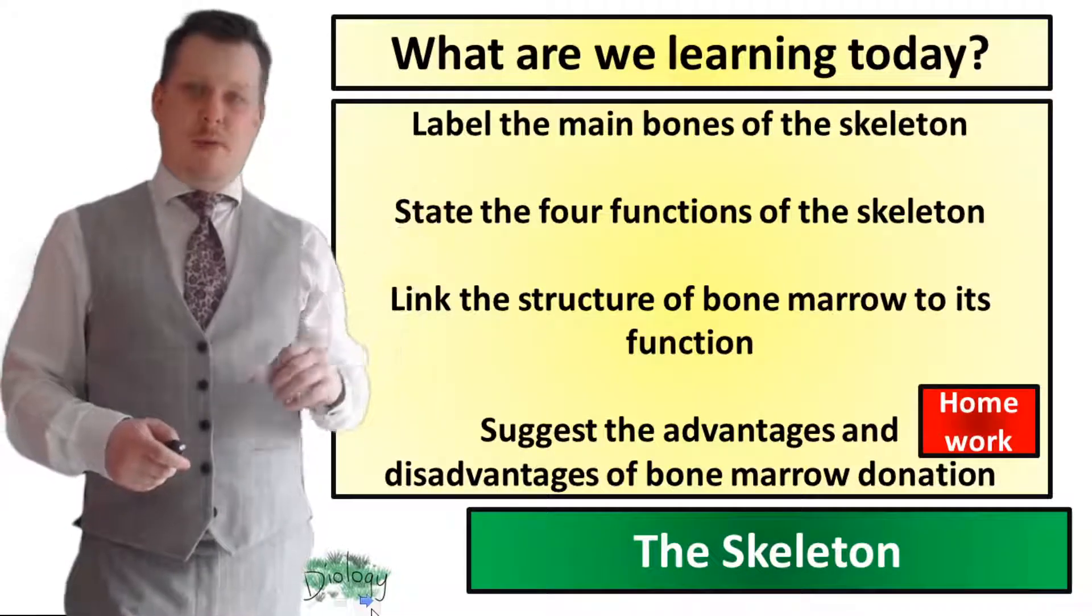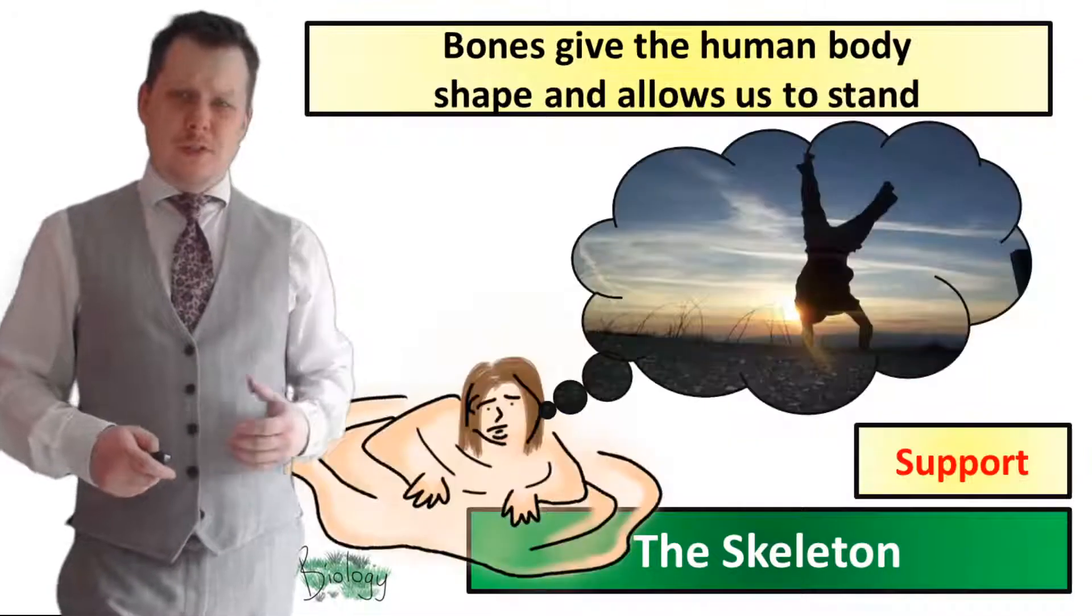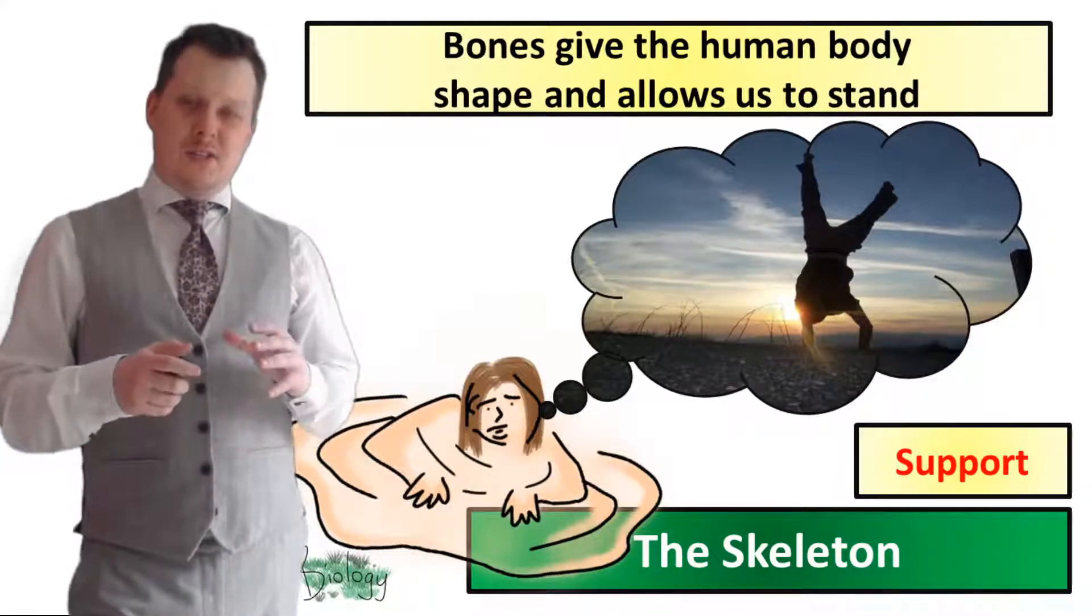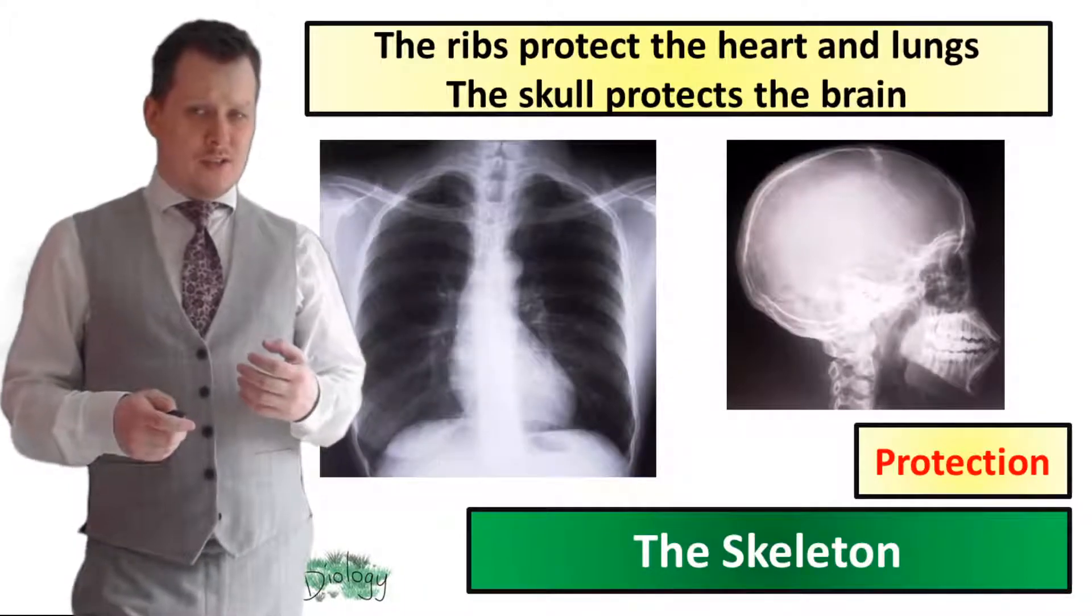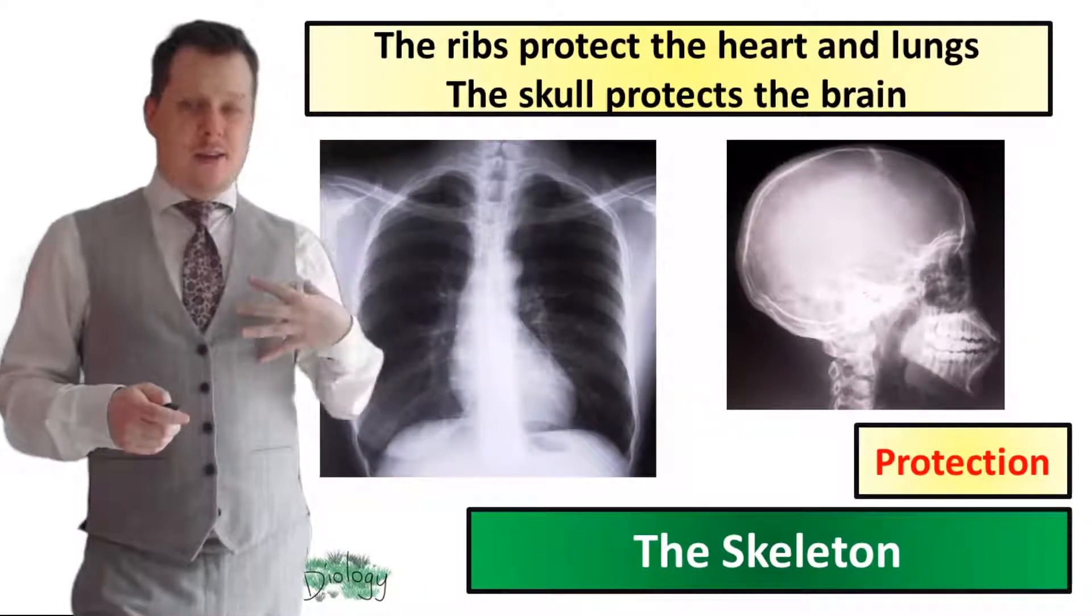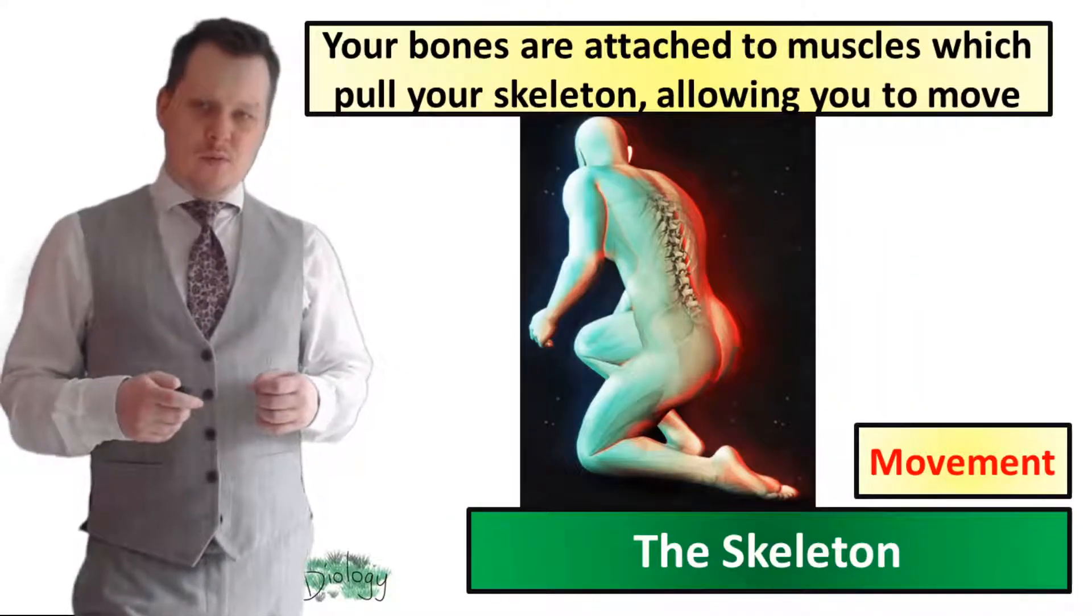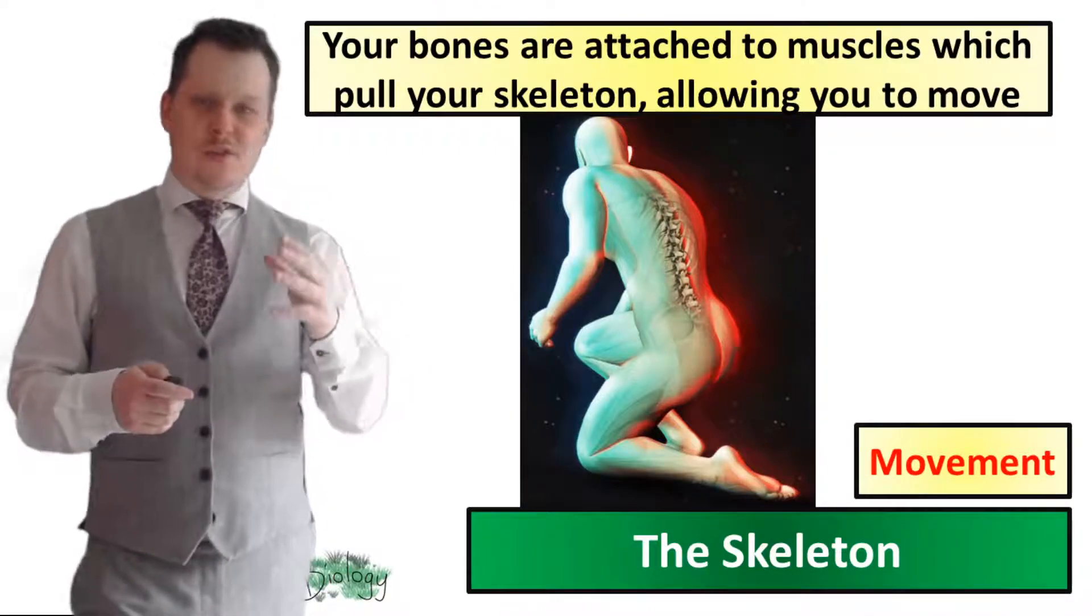So we've labelled the main bones of the skeleton now so we can check that off our list. Now we need to look at the functions of the skeleton. The skeleton gives the human body support, gives it its shape, and allows us to stand. It also offers us protection. The skull protects the brain. The ribs protect the heart and the lungs. It also allows us to move because your muscles are attached to your bones and they pull the skeleton resulting in movement.